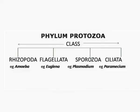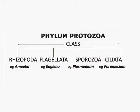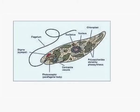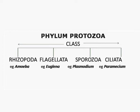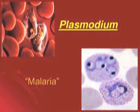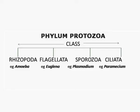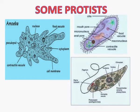Phylum Protozoa is divided into four classes. Class Rhizopoda includes all those organisms which move about with the help of pseudopodia — example is Amoeba. Class Flagellata includes all organisms which move about with the help of flagella — example is Euglena. Phylum Protozoa also includes Class Ciliata, which moves about with the help of cilia — for example, Paramecium. One well-known example is Plasmodium, and since they live in the body of the host and do not move about, they are grouped under Sporozoa.